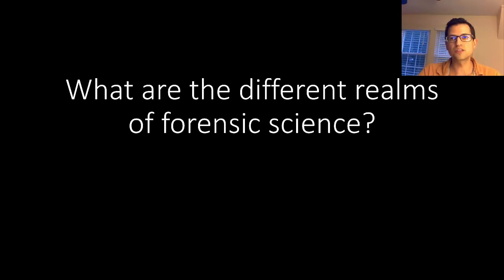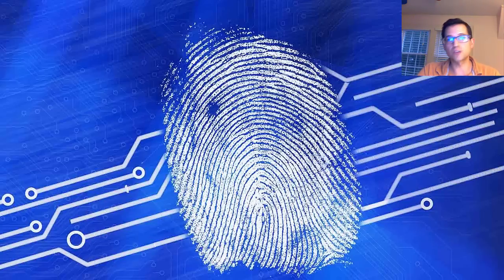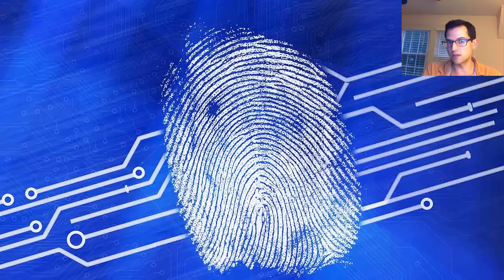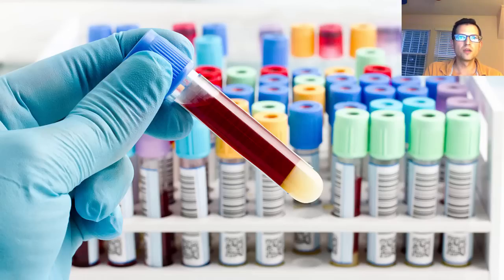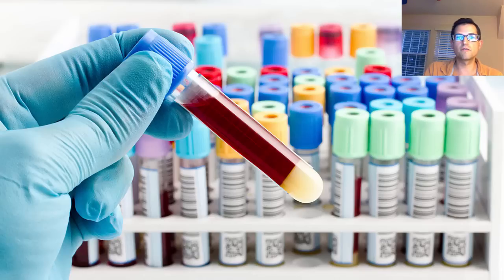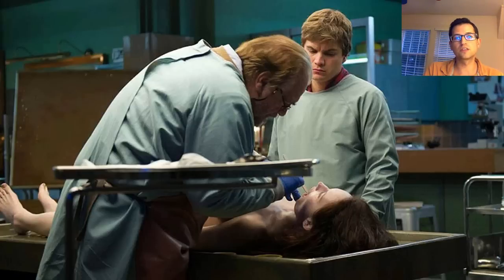What are the different realms of forensic science? Forensic scientists analyze fingerprints — comparing fingerprints found at a crime scene to the fingerprints of a suspect who is suspected of being involved in the crime. There is also serology or toxicology, which involves looking at body tissues and fluids to figure out things like whether there were drugs in the system of a victim at the time of their death, or whether they might have been poisoned. And there is forensic pathology.